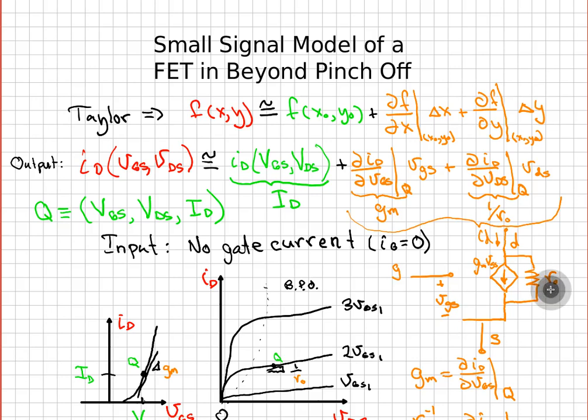The first term right here, which is represented by this voltage-dependent current source, and the little r sub o over here, which is represented by one over the partial of I_D with respect to V_DS. And so we have here the small signal model of the field effect transistor.